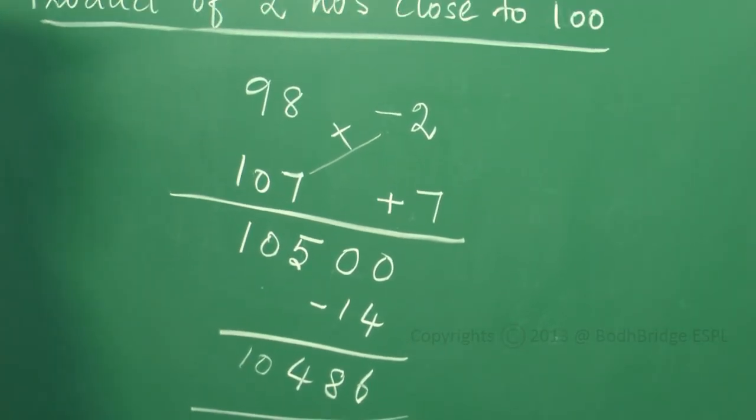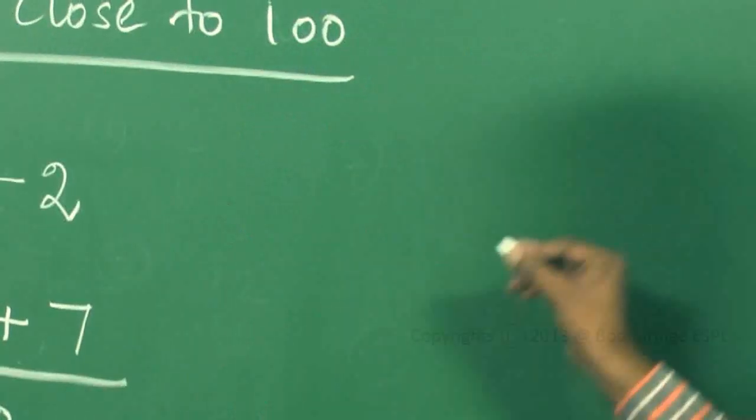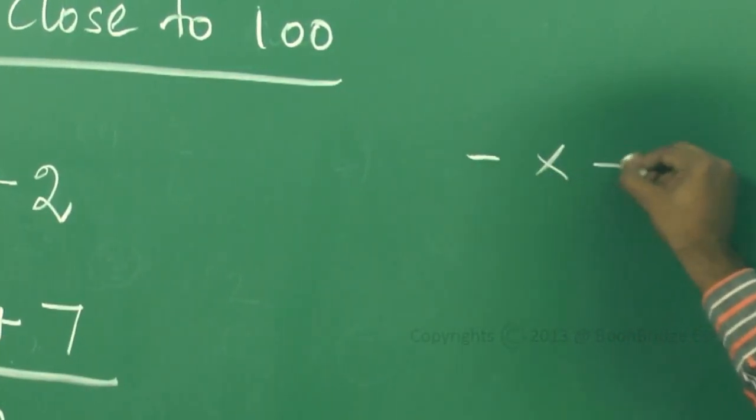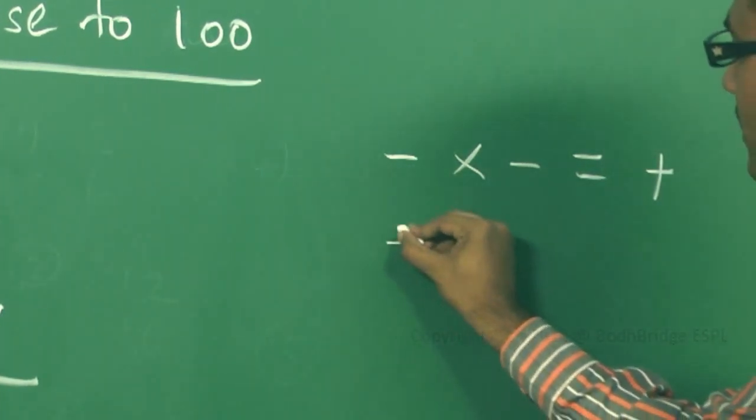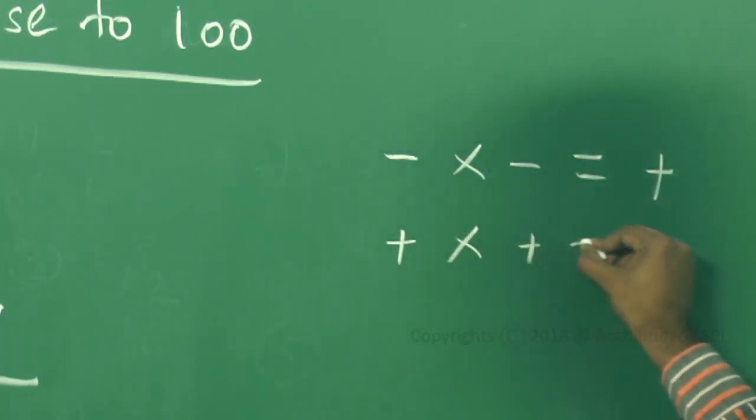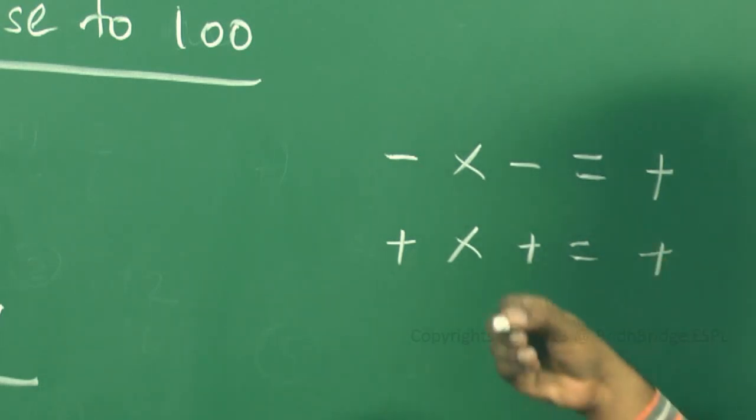In case of multiplication you should remember minus into minus will give plus. Plus into plus will give plus. If the sign changes, it will give us the result of minus. Whether you are multiplying minus by a plus number, that will give us a minus. Plus by a minus also will give us a minus number.